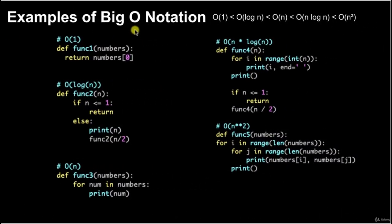Here we have examples of Big O notation. To the right, algorithms are classified in order from best to worst performance. Starting from O(1) — the fastest possible runtime, commonly referred to as constant running time. We have func1 and a list of numbers. This means to return the number at the beginning of the list. Accessing any single element in a list of numbers takes the same amount of time regardless of the length of the list.